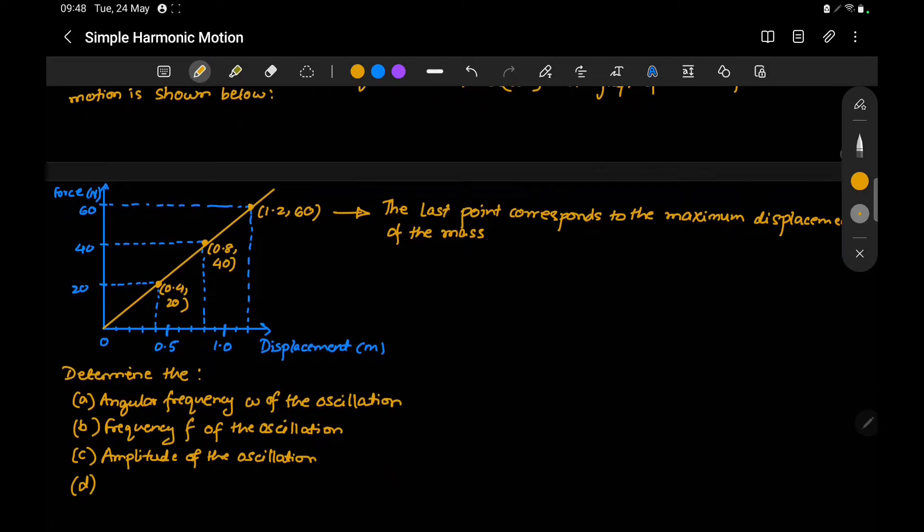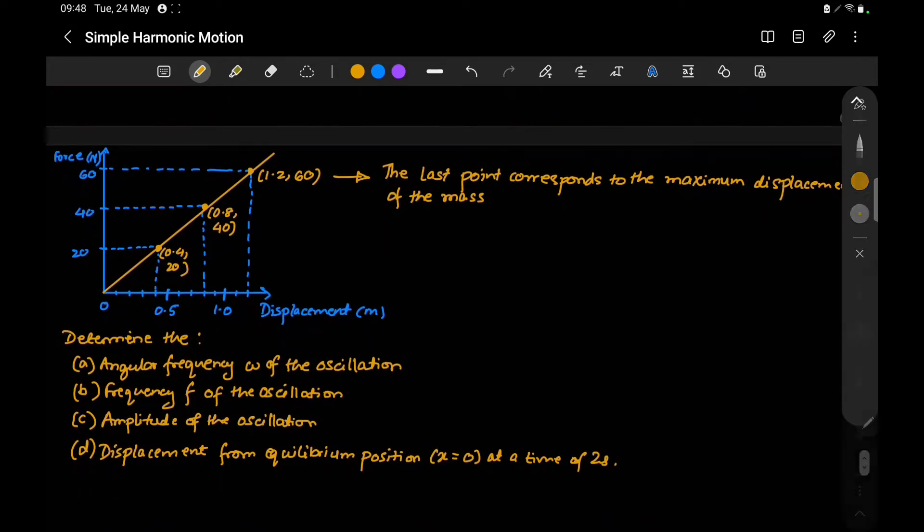And the last part (d): displacement from equilibrium position, x = 0, at a time of 2 seconds. Let us start solving the question.